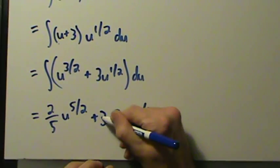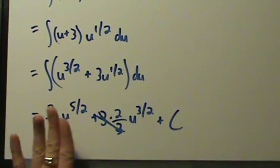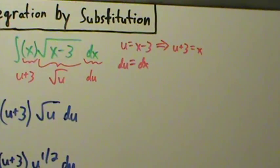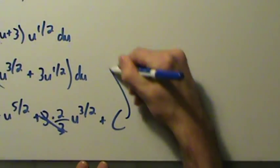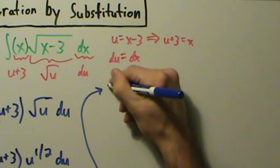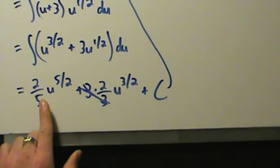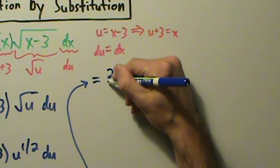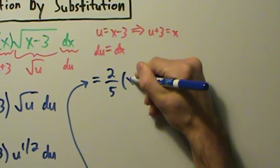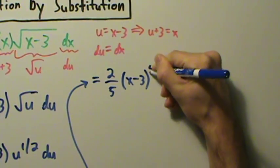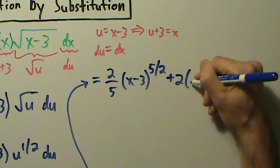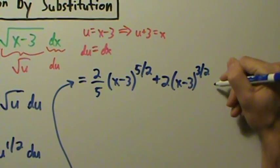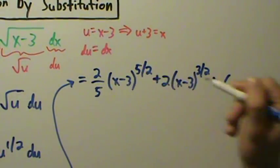Let's simplify a little bit. So 3 times 2/3 — the 3s cancel — we just have 2. Also, we have to go back to x, because the original problem was in terms of x and it's indefinite so we don't have limits of integration. So the result is 2/5 times x minus 3 to the 5/2, plus 2 times x minus 3 to the 3/2, plus C. And that's pretty much the final answer.